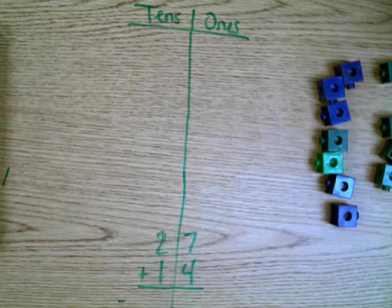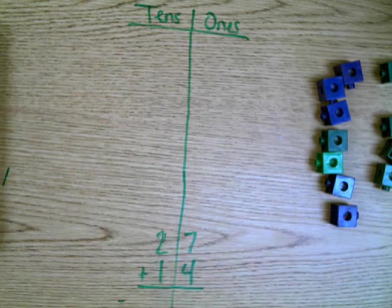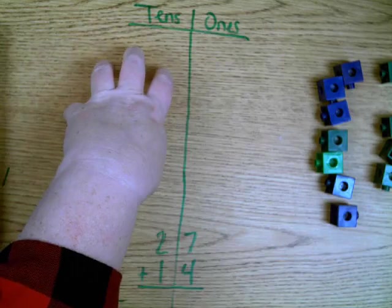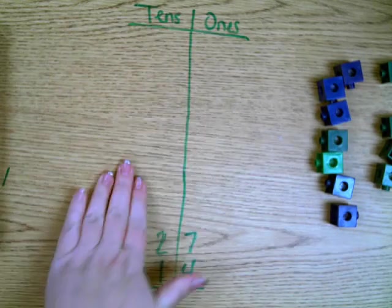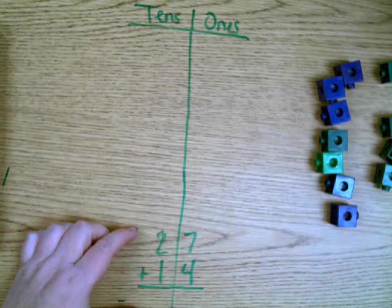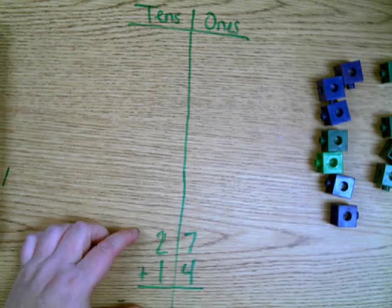All right, so this video is going to help students who are struggling with understanding how to regroup with addition. In this example, we've created our place value chart understanding the tens place and the ones place. Normally we're given an abstract equation like this and our students are asked to solve it.